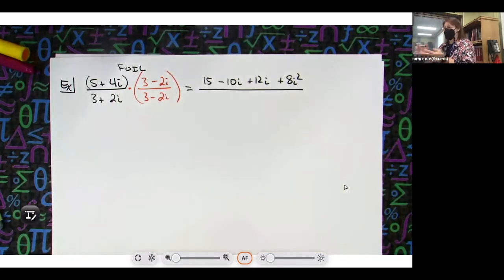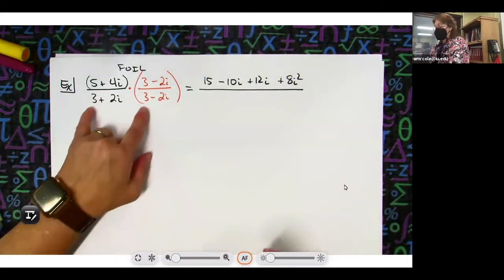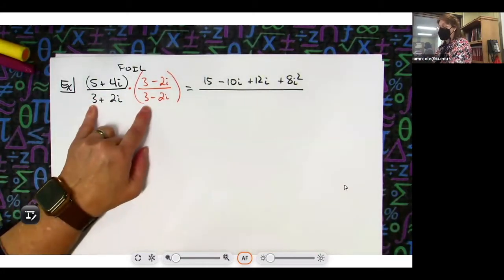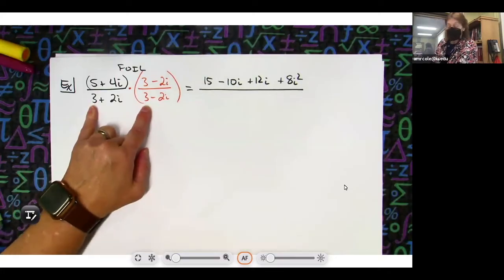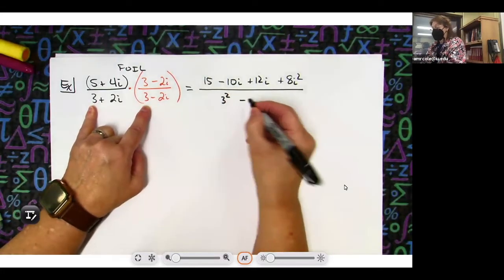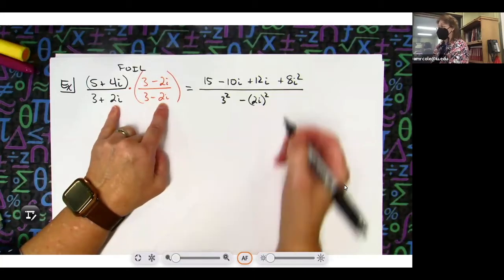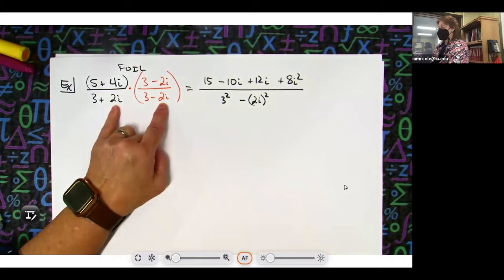On the bottom, 3 squared and then minus the second term which is a 2i inside a set of parentheses and square it. So you're squaring both.